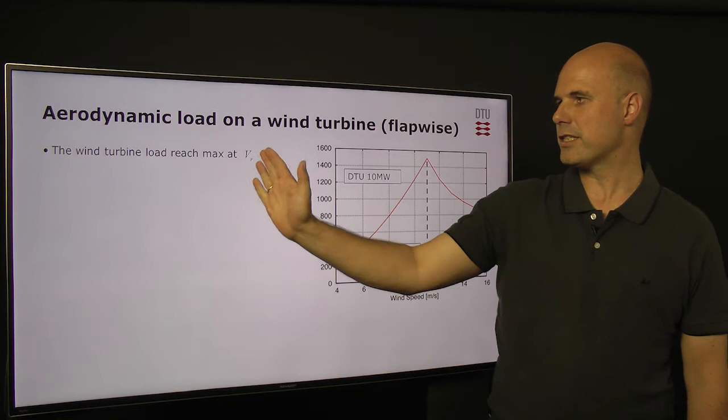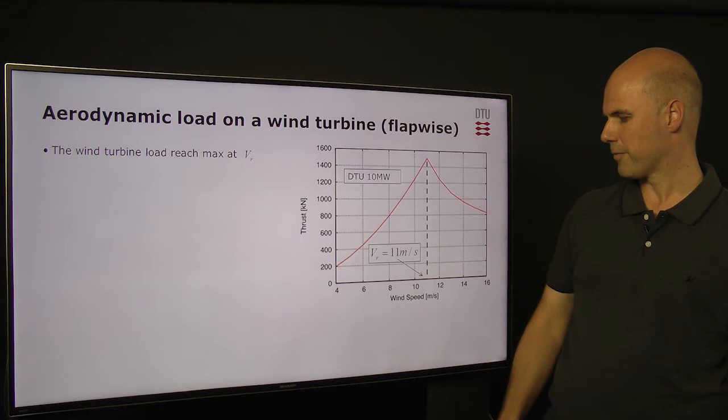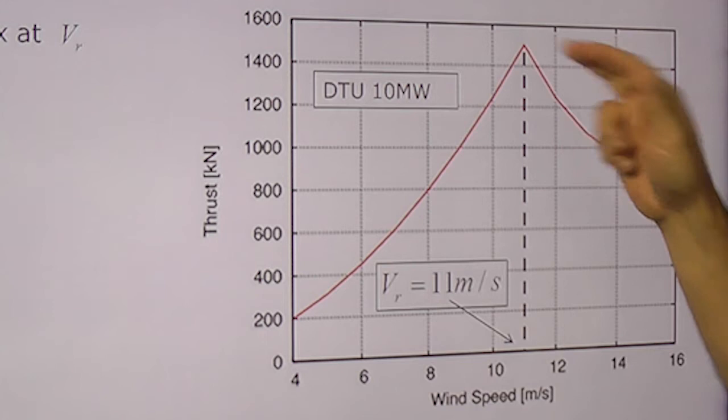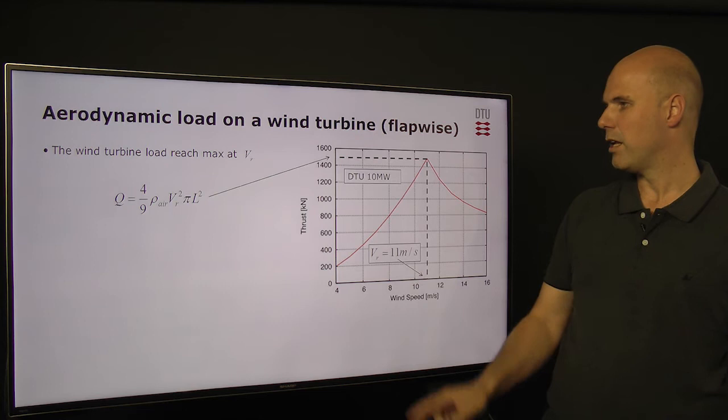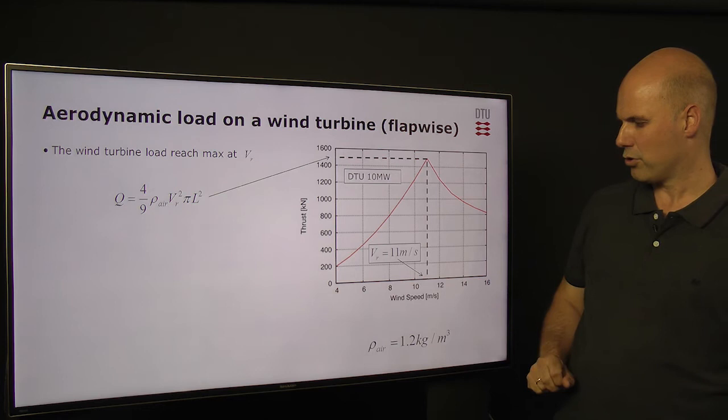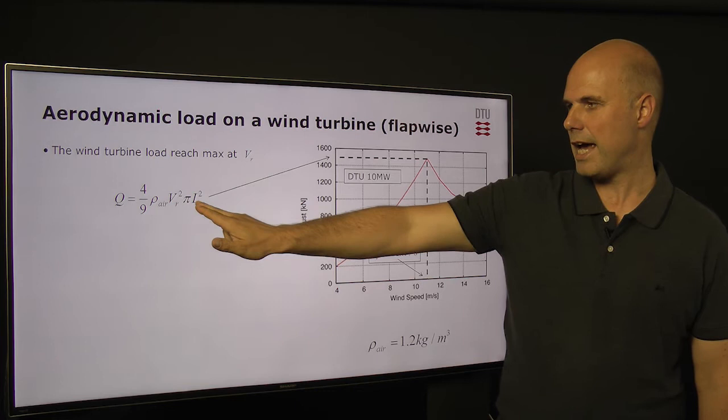You have learned earlier in the course that the maximum load on a wind turbine blade is reached when the wind speed is equal to the rated wind speed for the wind turbine blade. This speed corresponds to the point where the maximum production is reached for the turbine, meaning that we are reaching the power limit of the generator. The corresponding loading at this point is given by a small equation consisting of the density of the air — shown here as 1.2 kg per cubic meter — the rated wind speed, and the length of the blade.